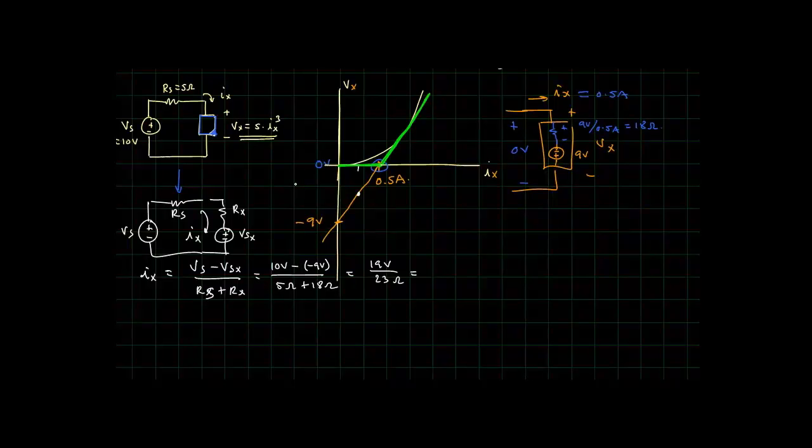We can say then that our model is going to be as follows: Vx will be equal to minus 9 volts plus 18 ohms times Ix for currents Ix greater than 0.5. Otherwise, Vx is going to be equal to 0 volts for Ix less than or equal to 0.5 amps.